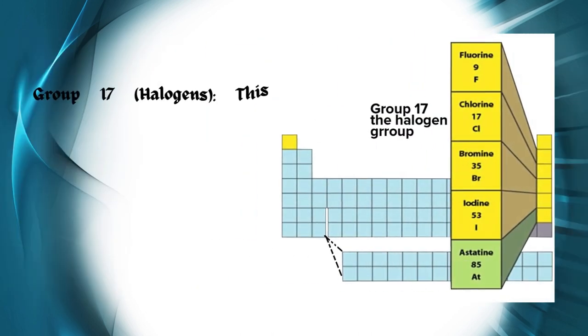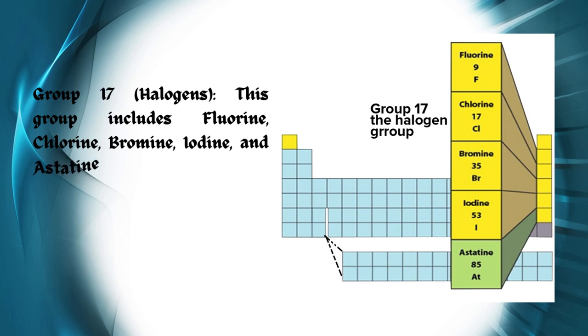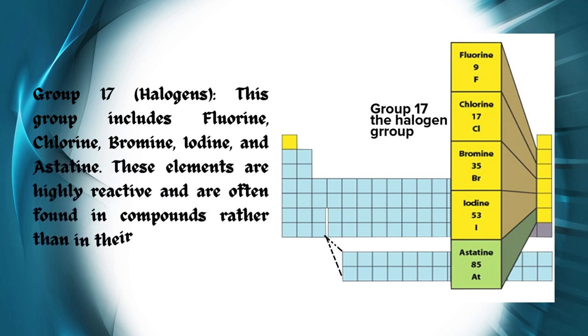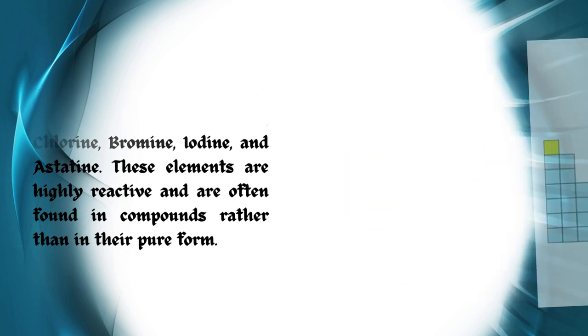Group 17, Halogens: This group includes fluorine, chlorine, bromine, iodine, and astatine. These elements are highly reactive and are often found in compounds rather than in their pure form.